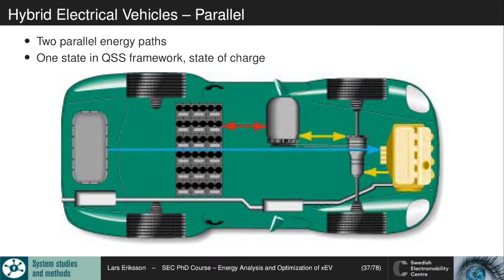Before going into it, we just make a short repetition of some of the main concepts that we have seen. We have looked at the hybrid electric vehicles and the parallel hybrid where we have two parallel energy paths: one one-way path that goes from the fuel tank out to the wheels, and one two-way path that goes from the battery to the wheel and back into the battery again. So we can do regenerative braking and load shifting.